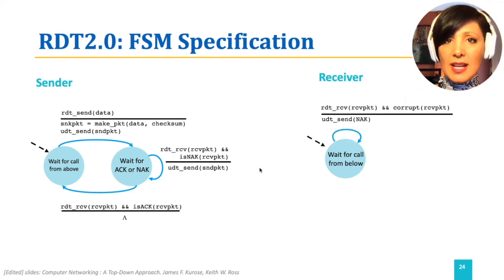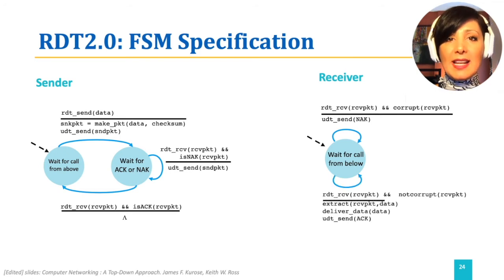If the packet is not corrupt, it removes data from the packet and passes the data to the upper layer using Deliver Data. In both events and after both actions, the receiver stays in the same state.